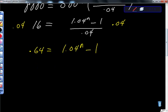So far, so good. Keep in mind, please, the whole time we're trying to solve for this value n right here. So what I'm going to do is, here's the negative 1, I'm going to add 1 to both sides to give us 1.64 is equal to 1.04 to the nth power.